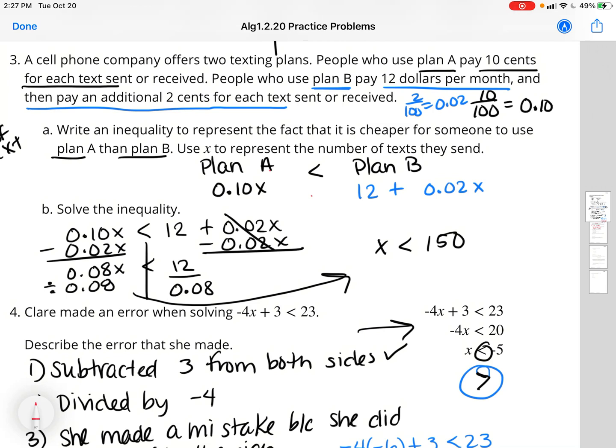So that's our inequality. You are just looking at the word problem, underlining or highlighting the important information and taking that information and writing it into an inequality. For letter B, you are actually going and solving it. So I put it together. 0.10x is less than 12 plus 0.02x. Remember, our whole purpose is to get the variable by itself. Here I have the variable on both sides of the equation. So I subtracted 0.02x from the right and from the left.